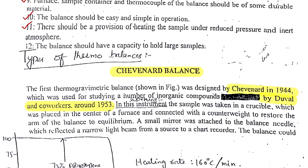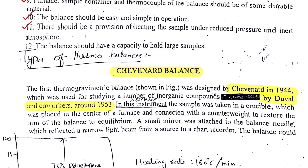Being a new method, a new device was produced and structured by Chevinard in 1944, and this was the very first thermobalance, called the Chevinard thermobalance. Later, analysis of inorganic compounds was done by Doble and co-workers in 1953. As this was a first attempt, it did not yet have all the good qualities of a thermobalance as discussed in the upper section, although it was a delicate thermobalance for its time.